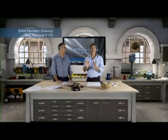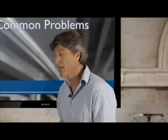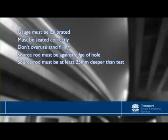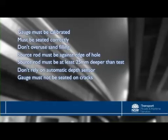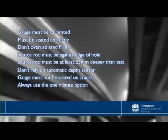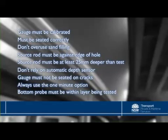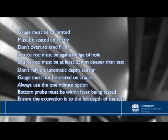So that just about wraps up nuclear field testing. Let's run through some of the key areas for error. The gauge needs to be calibrated at least every two years. The gauge needs to be seated properly. Don't use sand unnecessarily. The source rod hole needs to be at least 25 millimetres deeper than the test. Automatic depth sensors can be wrong if dirty — you must check visually as well. The gauge must not be seated on any cracks. Always use the one minute option. Ensure the probe is within the layer being tested. And lastly, ensure that the excavation is to the depth of the test.